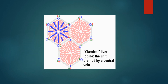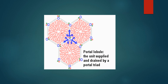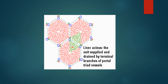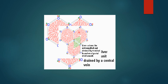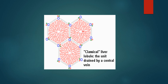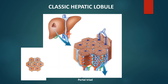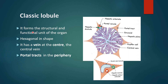The classic lobule is drained by the central vein and direction of blood flow is from periphery to the center. In the portal lobule, the portal area is at the center with three central veins at the corners. In the acinus of Rappaport, the short axis is formed by anastomosing branches of the portal area and the long axis by a line drawn from two central veins. The classic hepatic lobule forms the structural and functional unit of the organ — a hexagonal block of tissue with the central vein or terminal hepatic venule at its center.